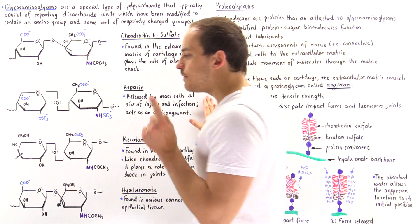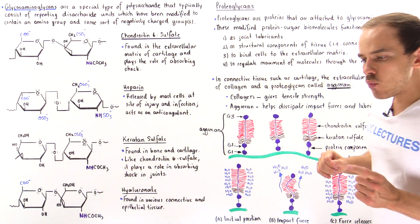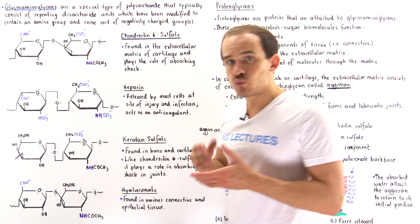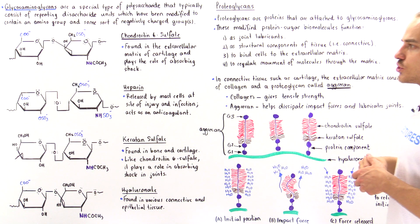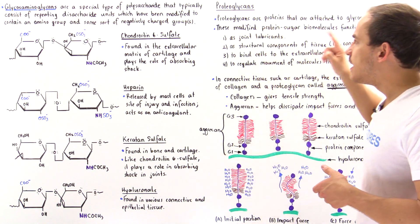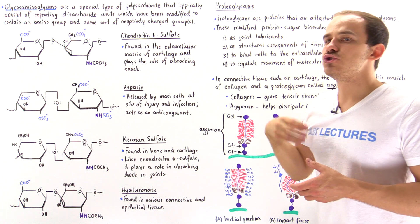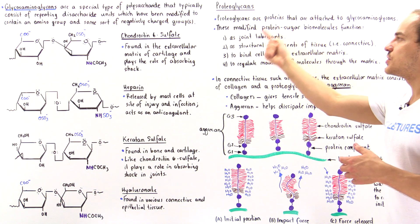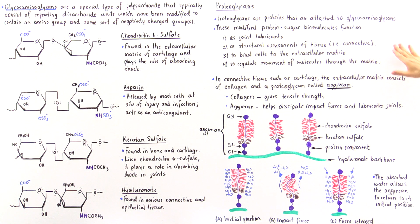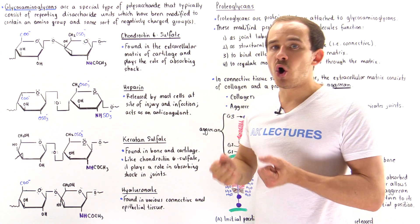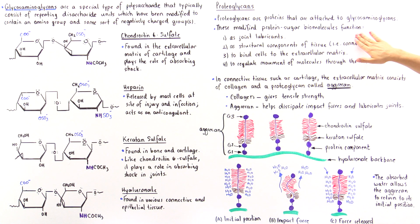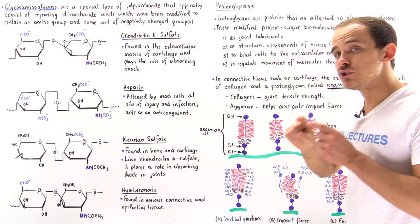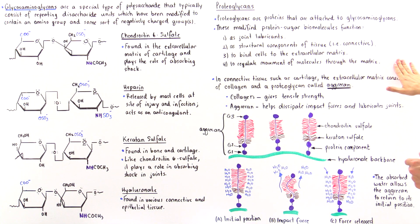What are the functions of proteoglycans? These protein-sugar biomolecules have four important functions. Function one: they act as joint lubricants. Function two: they function as structural components of tissues, including connective tissue such as bone and cartilage. Function three: they bind cells to the extracellular matrix. And function four: they move molecules through the extracellular matrix.